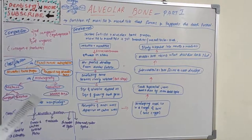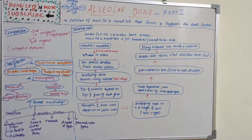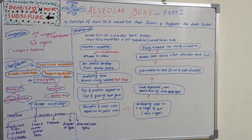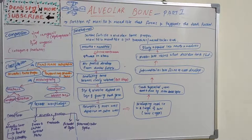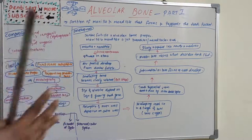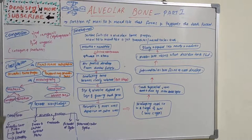Understanding the periodontium and its components requires thorough knowledge of tooth formation and its stages — bud stage, cap stage, bell stage. A proper knowledge of basic concepts is essential because all are interconnected. Tooth formation happens altogether: enamel, dentine, pulp, root, periodontal ligament, cementum, and gingiva all form as a unit. You cannot skip one unit and learn another, so you need a solid understanding of bud, bell, and cap stages.